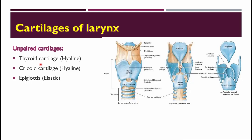The thyroid and the cricoid are mainly of the hyaline variety, which means they have a tendency to get ossified. The epiglottis, on the other hand, is of elastic cartilage — or more precisely, it is fibroelastic in nature.